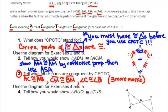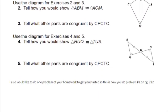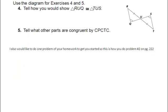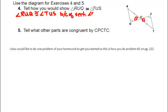We're going to do the same thing again for numbers four and five. My recommendation is you try to answer it yourself first by pausing the video, then restart to check. Number four says: tell how you would show these two triangles are congruent. I only have two marks available, but I can mark these angles congruent because of vertical angles — angle RUQ is congruent to angle TUS by vertical angles. Then I would use angle-angle-side to prove the two triangles are congruent.